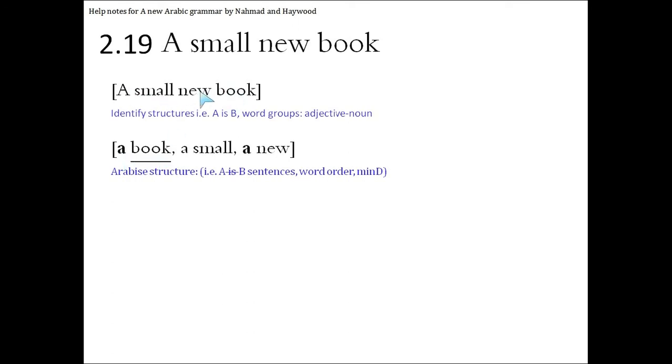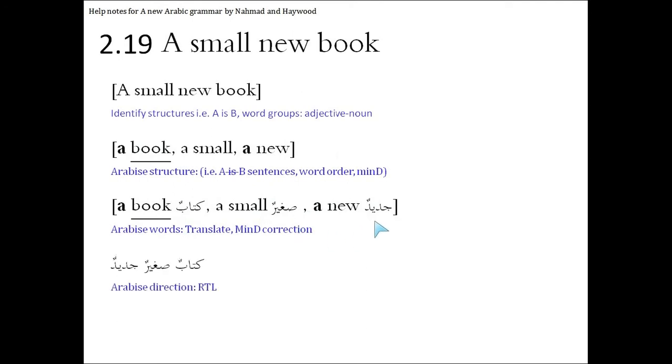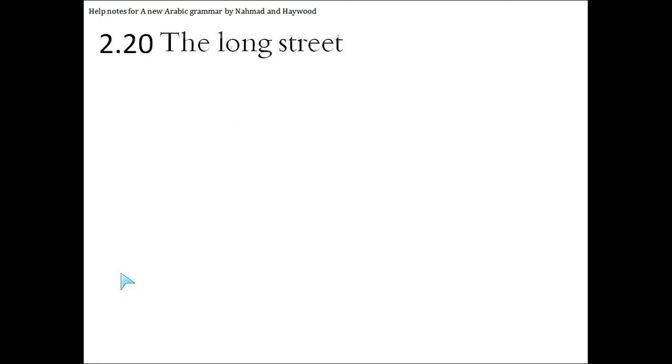Then we give it an indefinite article: it will be 'a book', because 'a small new book' applies to all of this. 'A small' and 'a new', so they will have three words put in Arabic: a book, kitabun; a small, sagheerun; a new, jadeedun. Kitab is male, therefore sagheer will be male and jadeed is male. So we put it all together in the right-to-left direction: kitabun sagheerun jadeedun. Finally, the long street.